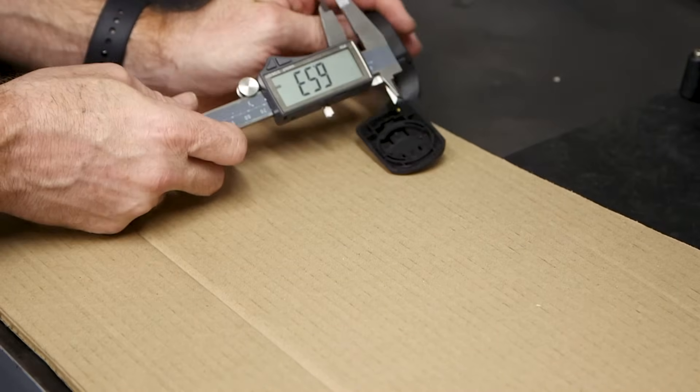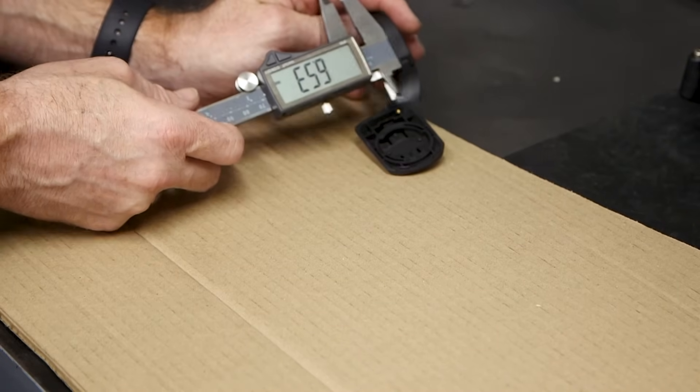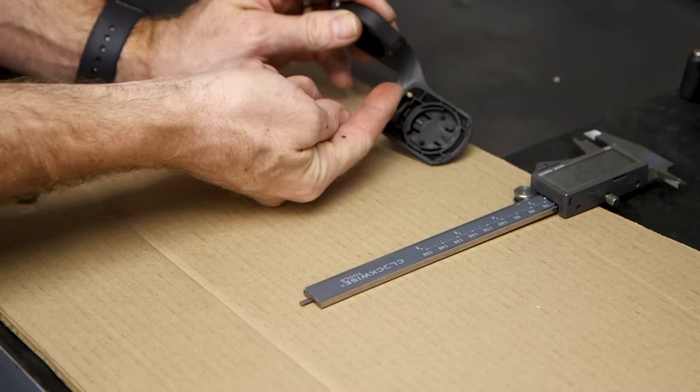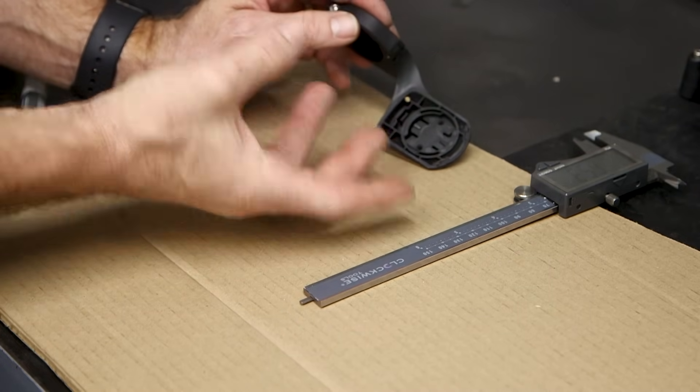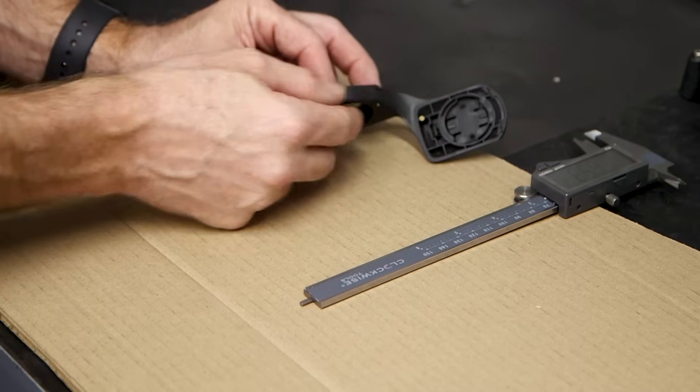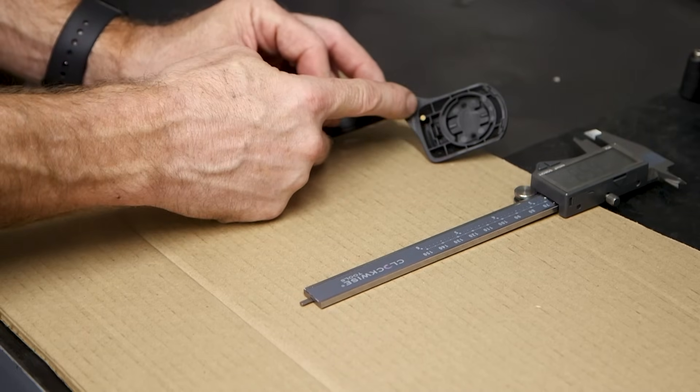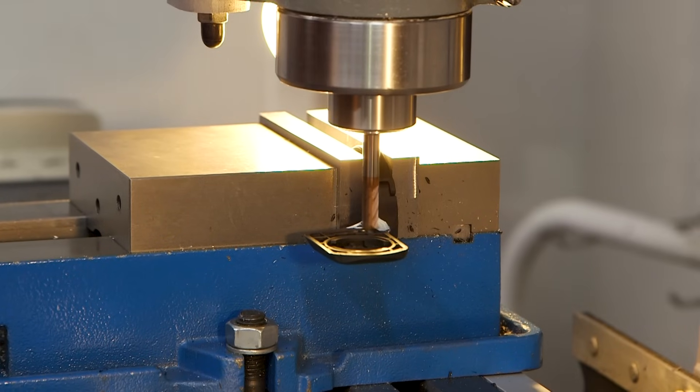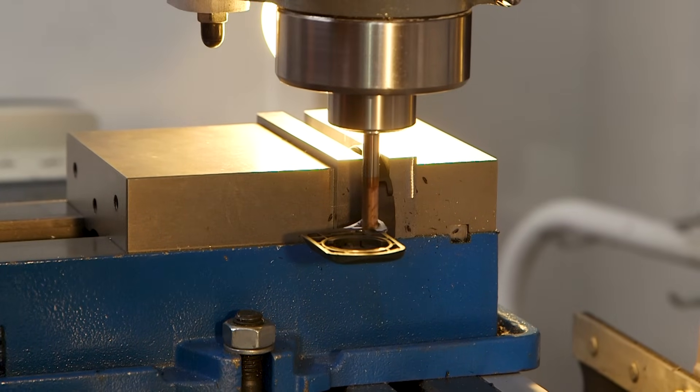So we need to remove 6.53 millimeters of material from this mount to make this work. So from that edge right there, 6.53 millimeters that way. Because we have to be so exact and we can't remove too much material, I'm going to put this in my mill and I'm just going to hog that out with an end mill. Let's go.